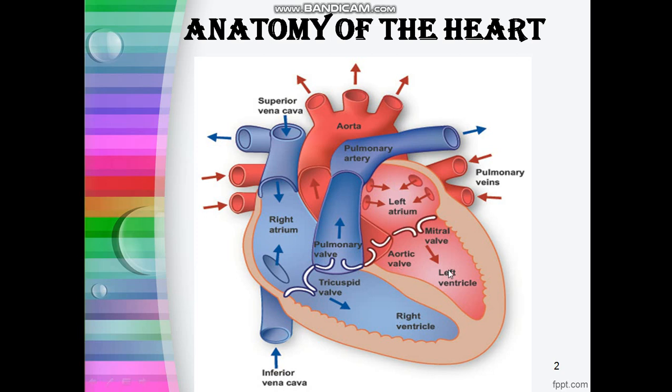You can also see here the arteries and veins. The function of arteries is to carry blood away from the heart, and the function of veins is to carry blood to the heart. The atria act as receiving chambers for blood, so they are connected to the veins. The ventricles are connected to the arteries that carry blood away from the heart.